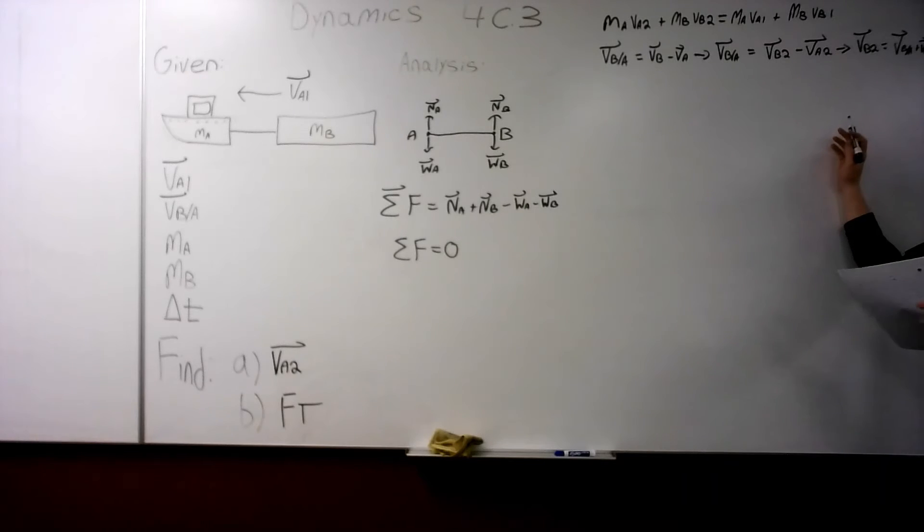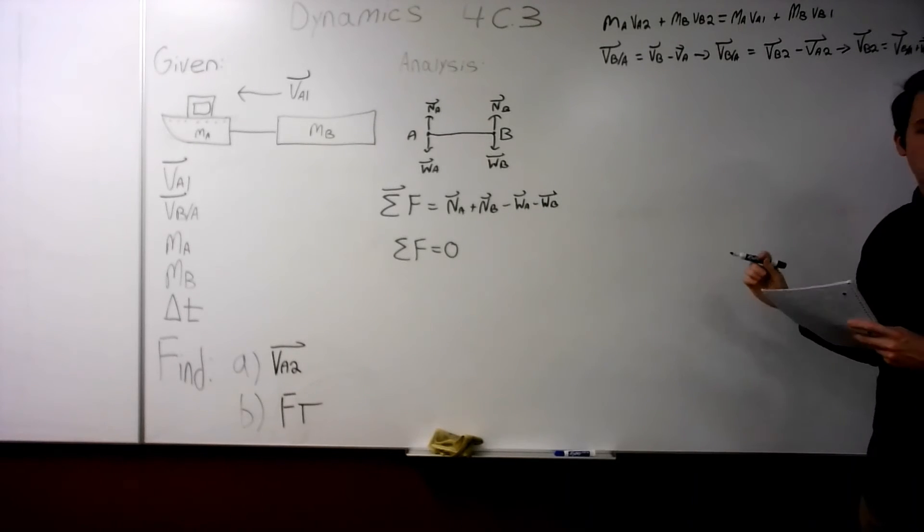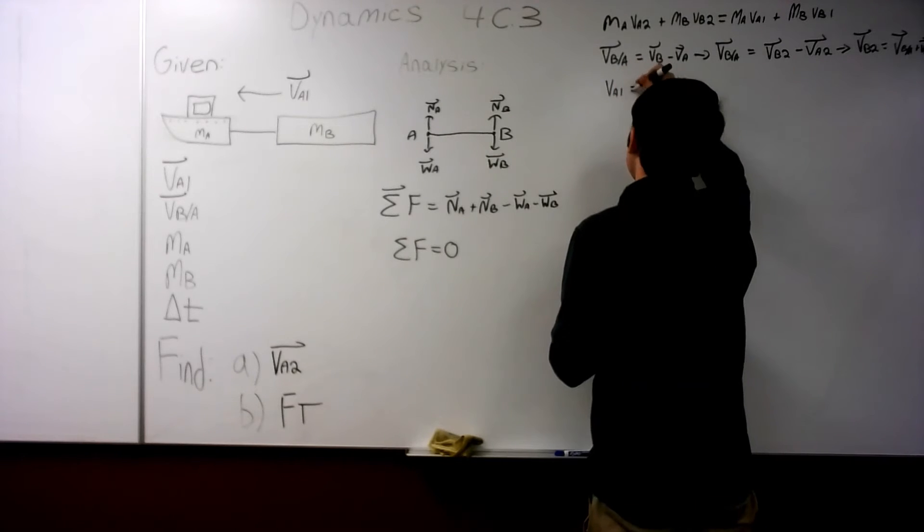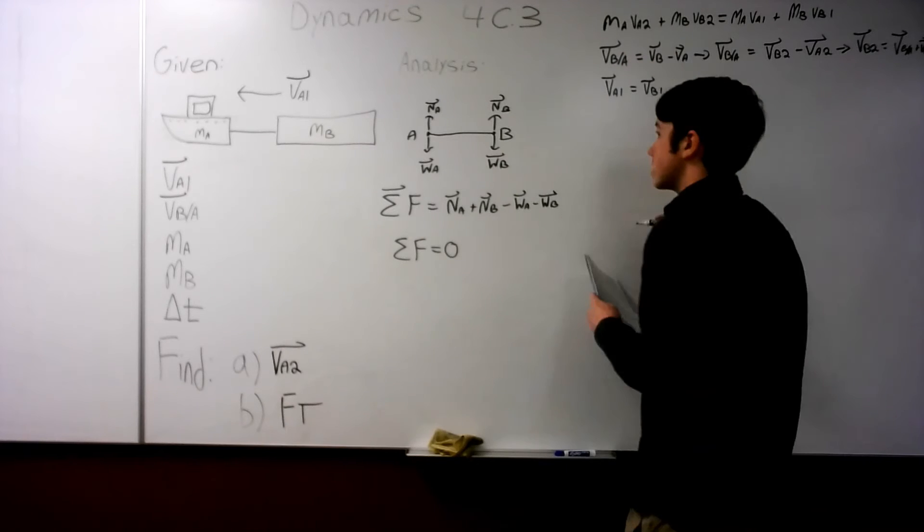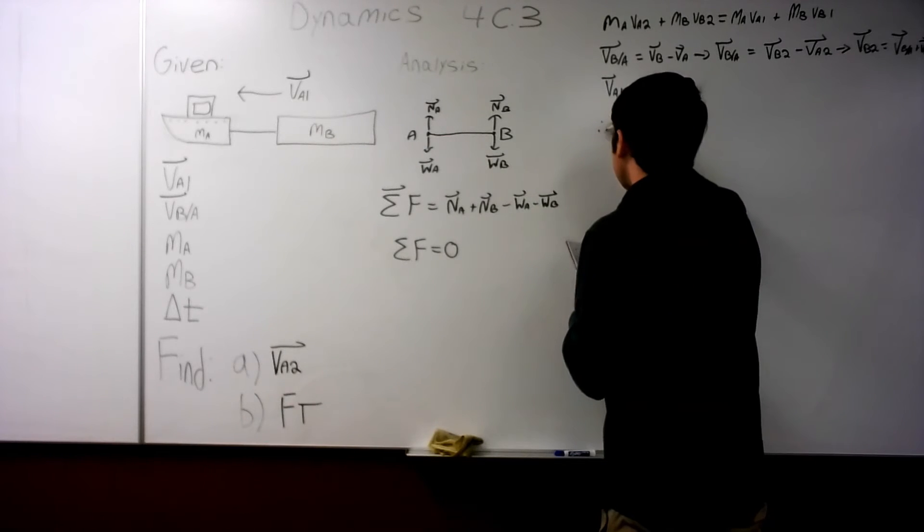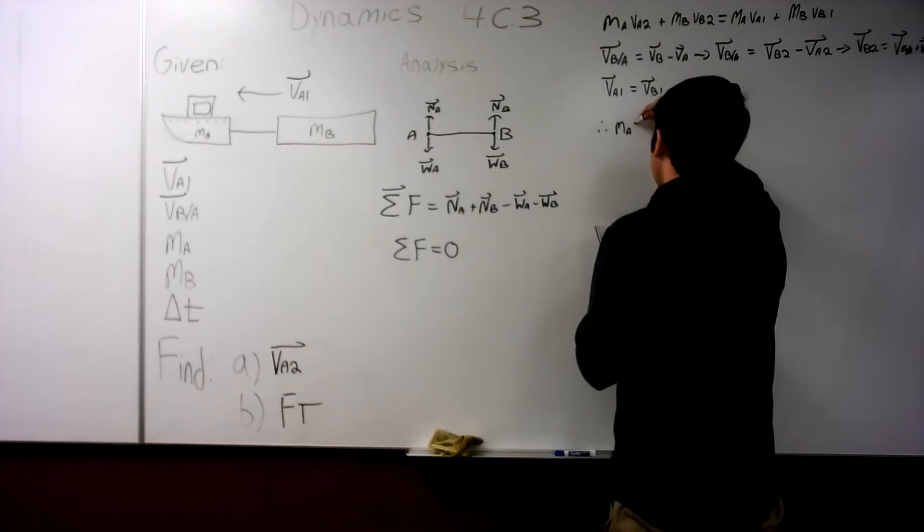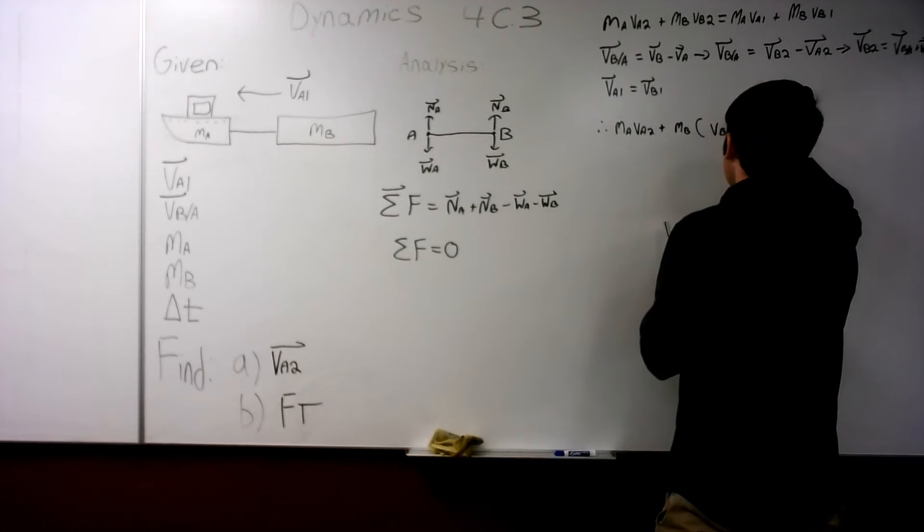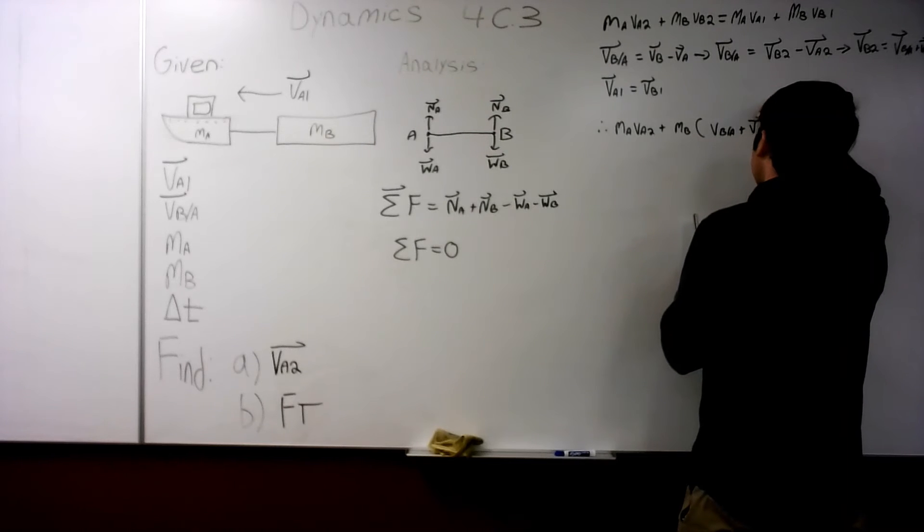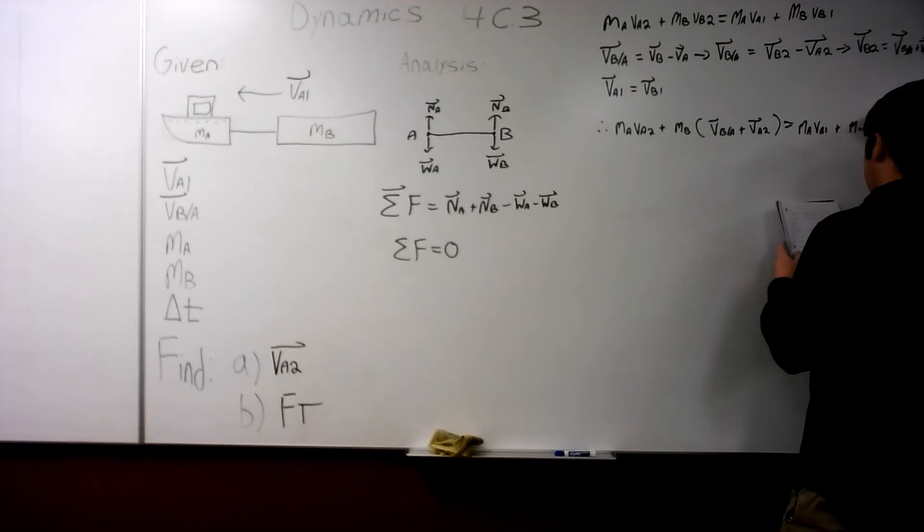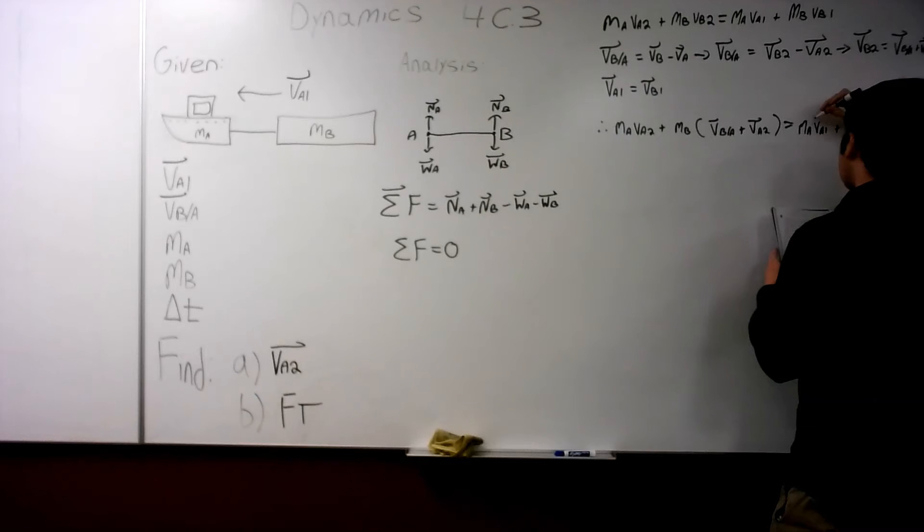And now that we have VB2 solved in this way, it allows us to plug that back into our original equation and solve. We also need the relationship that VA1 is equal to VB1. Because at the beginning, since MA is pulling MB, we will have the same velocity. So all that I add together, we're going to get MA VA2 plus MB times the quantity VBA plus VA2 is equal to MA VA1 plus MB times the quantity VB1.